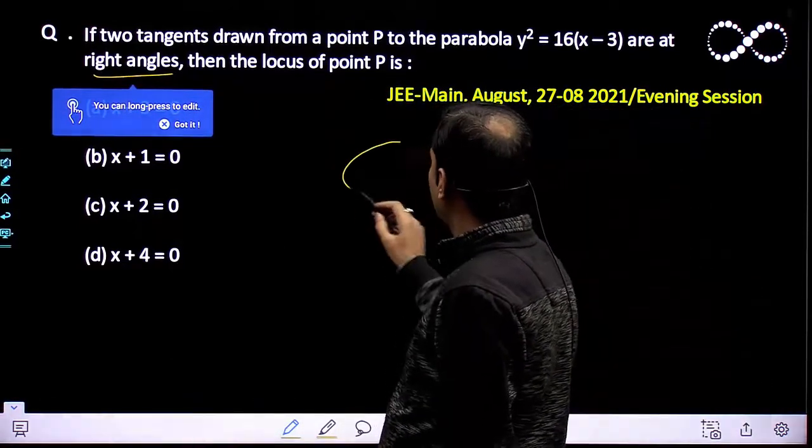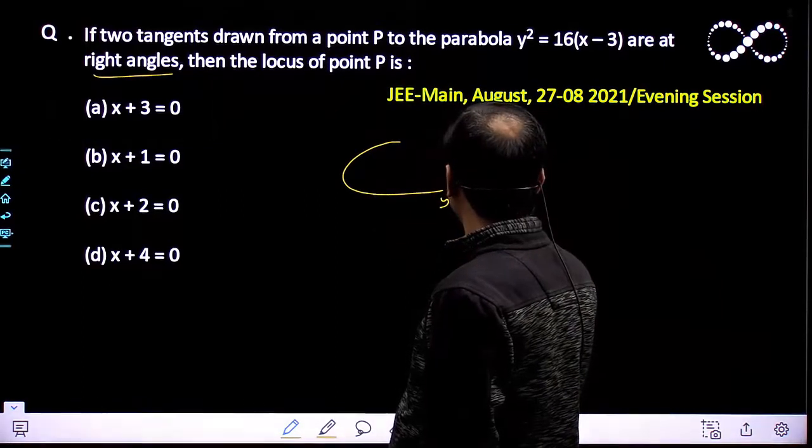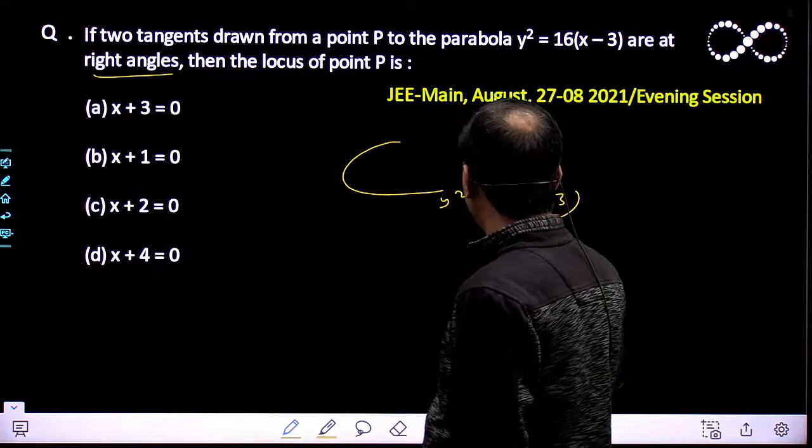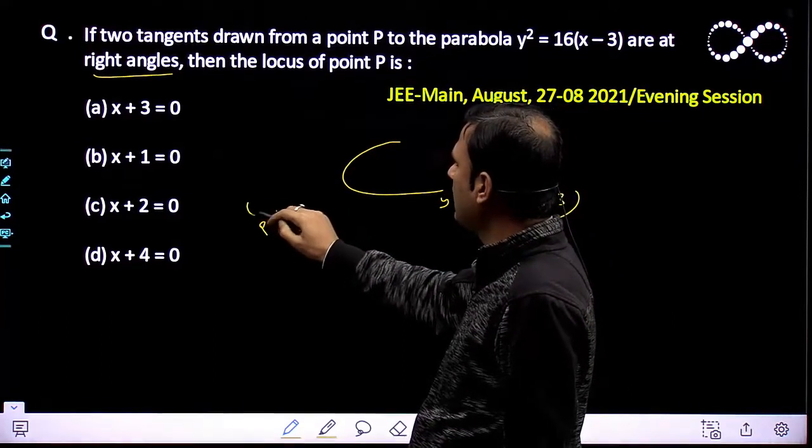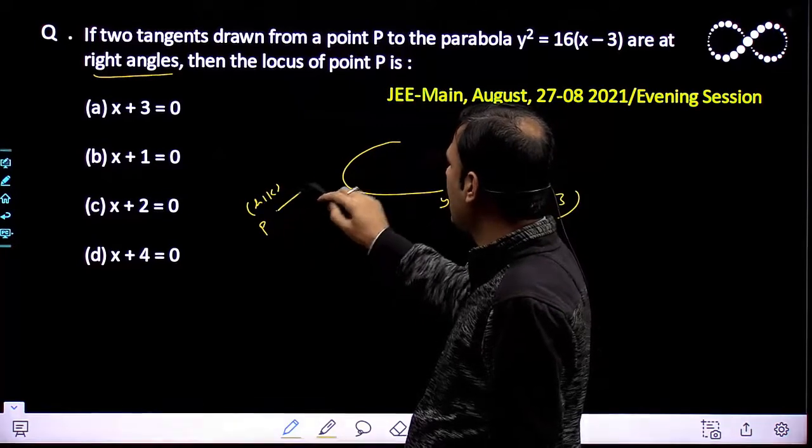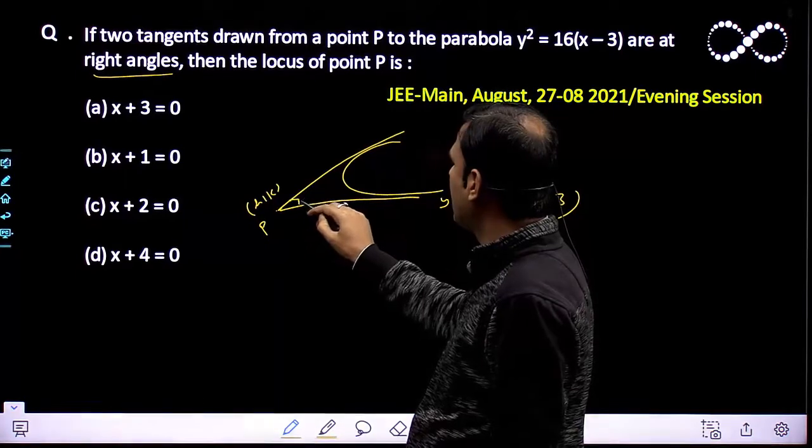We have a parabola y² = 16(x - 3). You need to find the locus of point, the locus of point. That means this point is (h, k) from where two perpendicular tangents are drawn. This angle is 90 degrees.